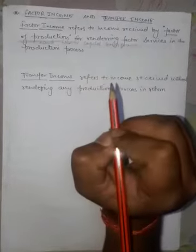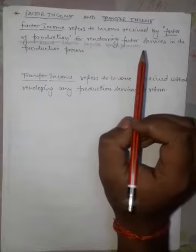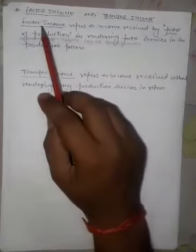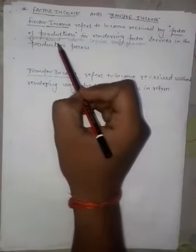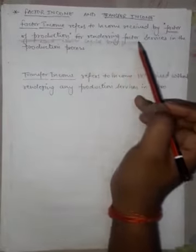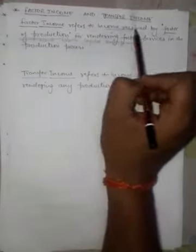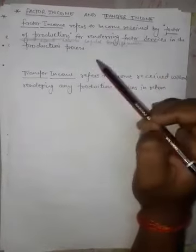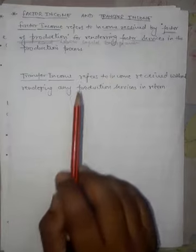You remember the factors of production? Factor income refers to the income received by factor of production — land, labor, capital, enterprises. By providing factor services with the help of factor of production, we receive factor payment. Factor income refers to the income received by factor of production for rendering factor services in the production process.